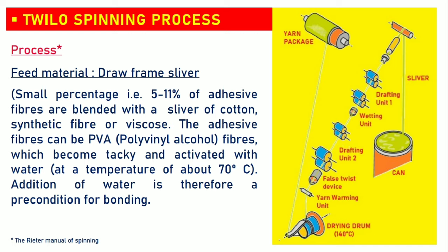Let's understand the Twilo spinning process in brief. The feedstock material is draw-frame sliver. A small percentage — 5 to 11% — of adhesive fibers are blended with a sliver of cotton, synthetic, or viscose. The adhesive fibers can be PVA (polyvinyl alcohol) fibers, which become tacky and activated with hot water at a temperature of about 70 degrees centigrade. Addition of water is therefore a precondition for bonding.